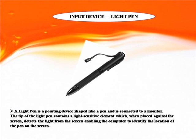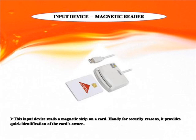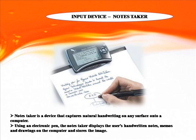Light Pen: A light pen is a pointing device shaped like a pen and is connected to a monitor. The tip of the light pen contains a light-sensitive element which, when placed against the screen, detects the light from the screen, enabling the computer to identify the location of the pen on the screen. Magnetic Reader: This input device reads a magnetic strip on a card, handy for security reasons. It provides quick identification of the card owner.